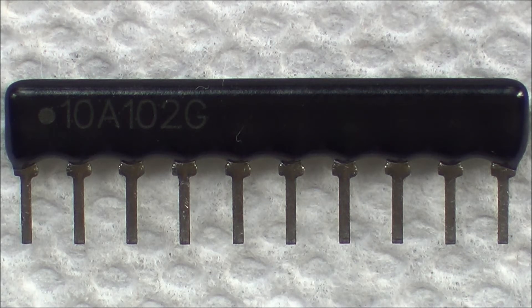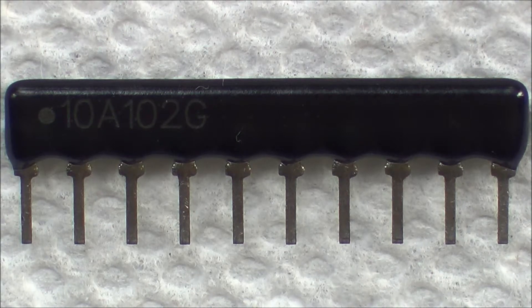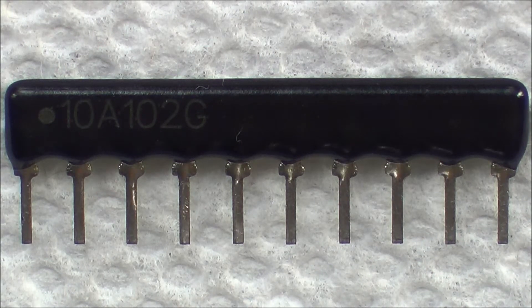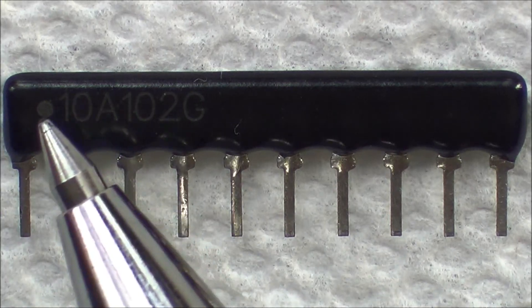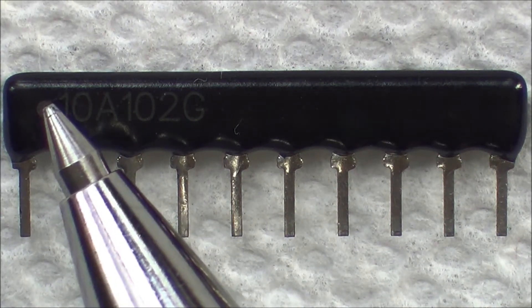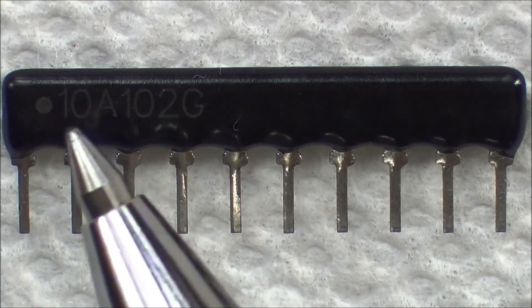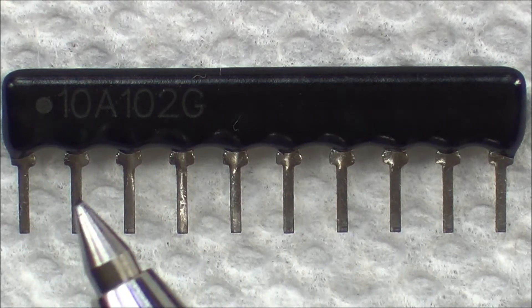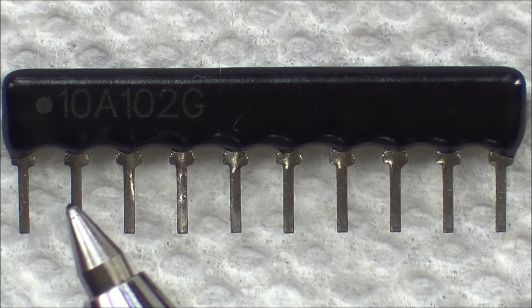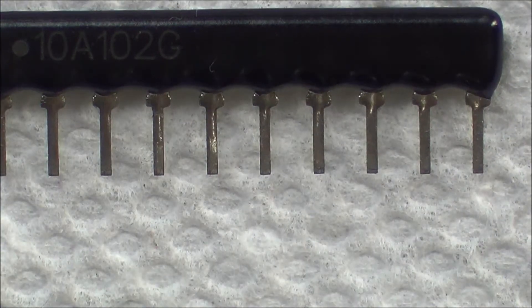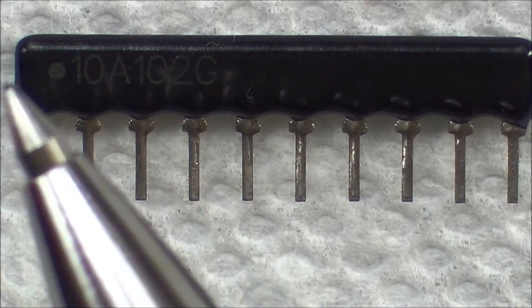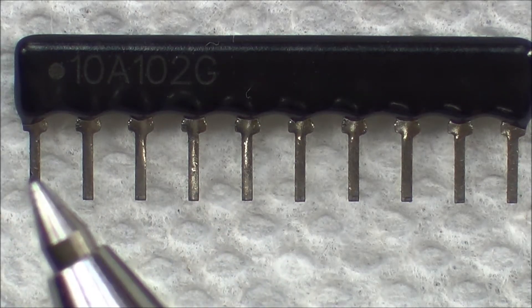This is it. The way you need to think about this is just think of this particular package as nine resistors connected together to one common lead. Make note of this dot here, this indicates the common lead for all the resistors. So there are actually nine resistors and there is one lead for each resistor exposed and the other side of each resistor is connected to the common resistor lead right here.